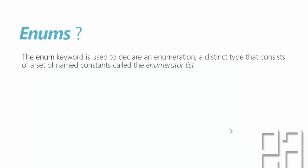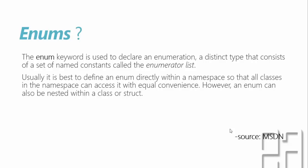Let's get started. Enums — what is this? The enum keyword is used to declare an enumeration, a distinct type that consists of a set of named constants called the enumerator list. Usually, it is best to define an enum directly within a namespace so that all the classes in the namespace can access it with equal convenience. However, an enum can also be nested within a class or a structure.